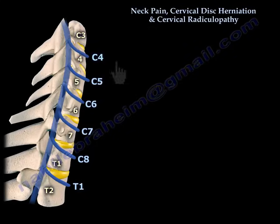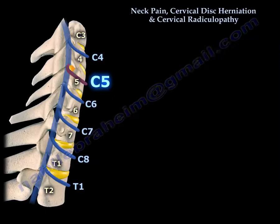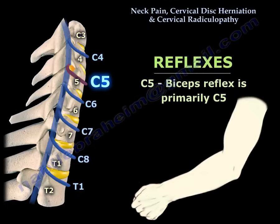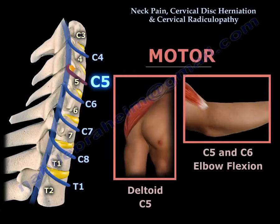If you have a C4-C5 disc bulge, it can affect the C5 nerve root, and this will affect sensation around the shoulder area. The C5 nerve root will affect the biceps reflex, because the biceps reflex is primarily C5. As regards the motor, C5 will affect the deltoid power and strength, and it could affect elbow flexion, which is C5 and C6.